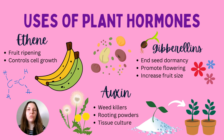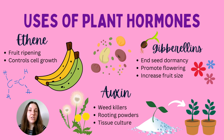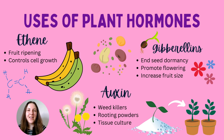Auxin has additional commercial uses beyond cell elongation. It is used as a weed killer and in rooting powders: if you take a cutting from a plant, dip it in auxin powder, and place it in soil, it will develop its own root system — effectively cloning the plant. This leads into the concept of tissue culture, a scientific method used to clone plants repeatedly, which has various pros and cons that will be covered in a future video.